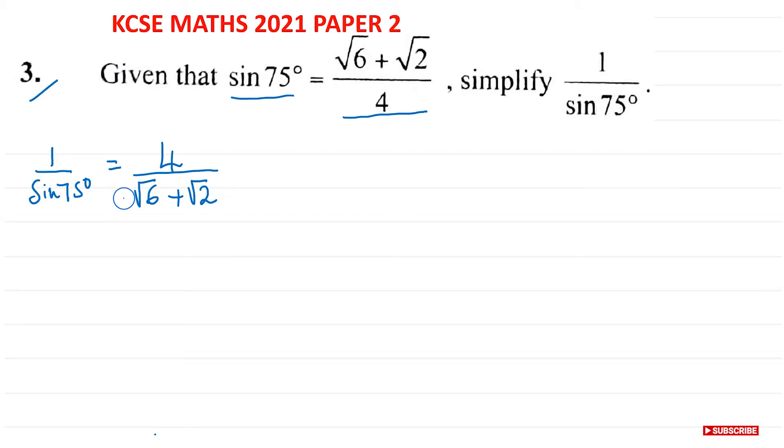Well, we can use the difference of two squares. If you remember, if you have a plus b, and then if you have a minus b, what you will get is a squared minus b squared. The other terms will just cross each other. This is what we call the difference of two squares.